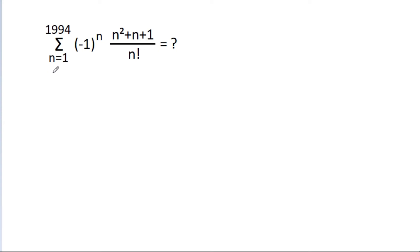In this video, we have to find the summation from n equal to 1 to 1994 of (-1)^n times (n² - n - 1) / n factorial.